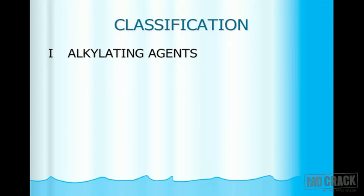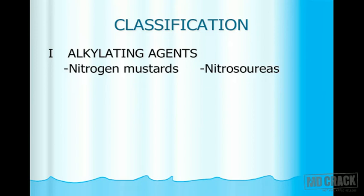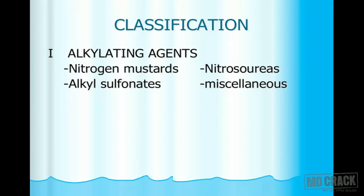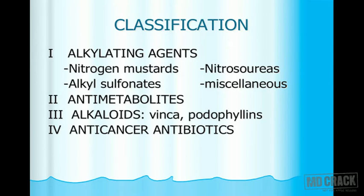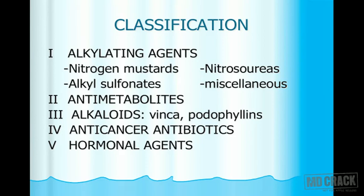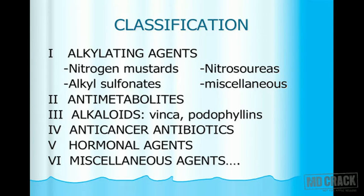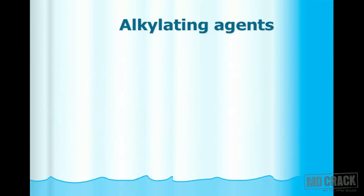In the traditional classification of anti-cancer drugs: (1) Alkylating agents — nitrogen mustards, nitrosoureas, alkyl sulfonates, and miscellaneous; (2) Anti-metabolites; (3) Alkaloids — vinca alkaloids or podophyllins; (4) Anti-cancer antibiotics — bleomycin (peptide antibiotic) and anthracyclines; (5) Hormonal agents; (6) Miscellaneous agents.